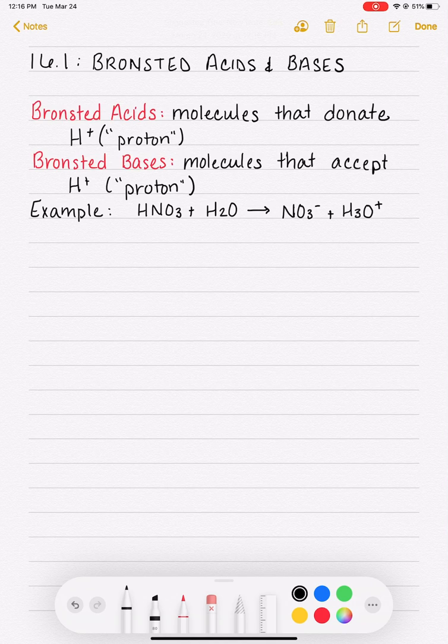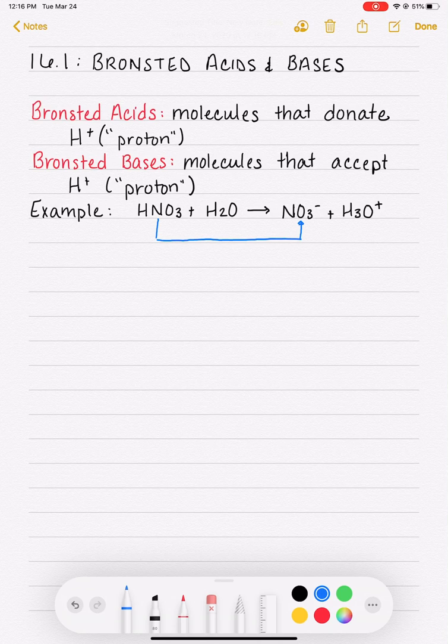If we wanted to classify our reactants HNO3 and H2O as either an acid or a base, we really need to look at what they're doing in this chemical reaction. We'll start with HNO3, classify that guy first, and ask ourselves what happened to HNO3 in this reaction. What did it turn itself into? Looking over at the right side, HNO3 most closely resembles NO3-, so our HNO3 turned into NO3-.